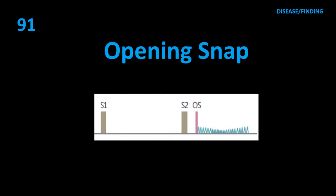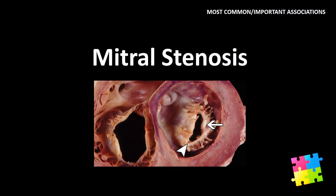Item 91: Opening snap — mitral stenosis.